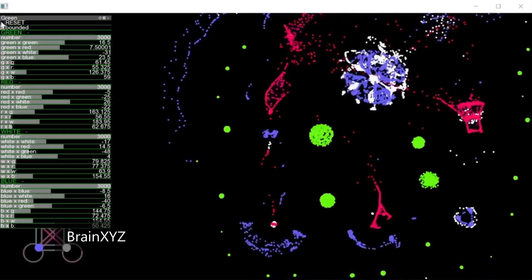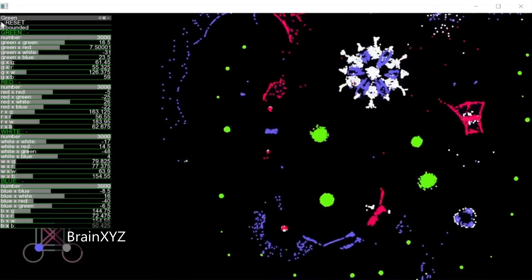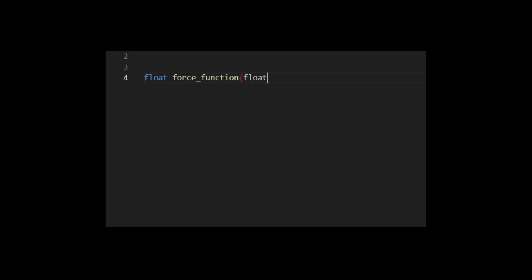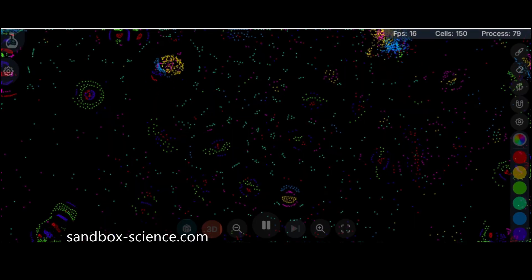That's when I spotted something interesting. The original force function had a harsh transition between the repulsion and attraction zones. Check this out. What's going on here is: if the distance r is less than beta, you get strong repulsion. If it's more than beta, but the change between the two is abrupt.